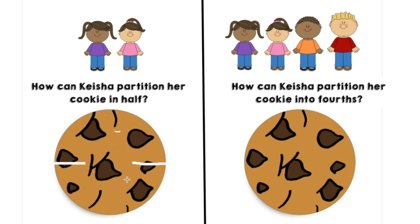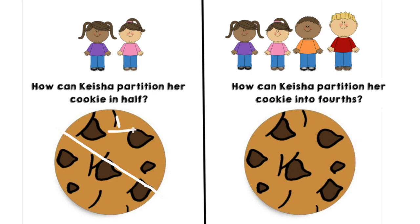I can still think of another way that we could partition this cookie in half. Keisha could also cut this circular cookie diagonally. Remember, diagonally is from corner to corner. Even though this circular cookie doesn't have corners, we can still cut it at a diagonal line. I could cut it diagonally this way or that way — I'm going to cut it diagonally this way. Keisha would receive a half of the cookie because she would have one out of the two parts, and her friend would receive half of the cookie because she would have one out of the two parts.